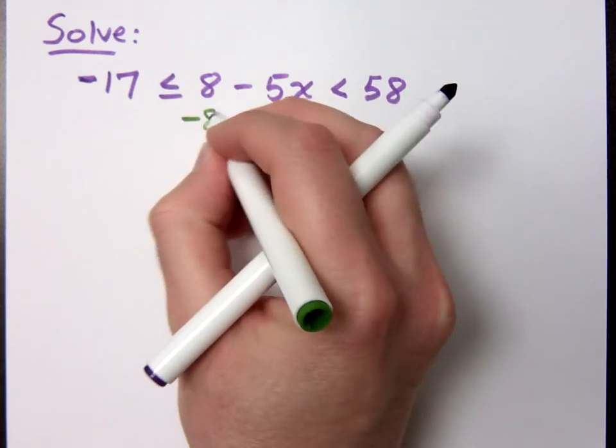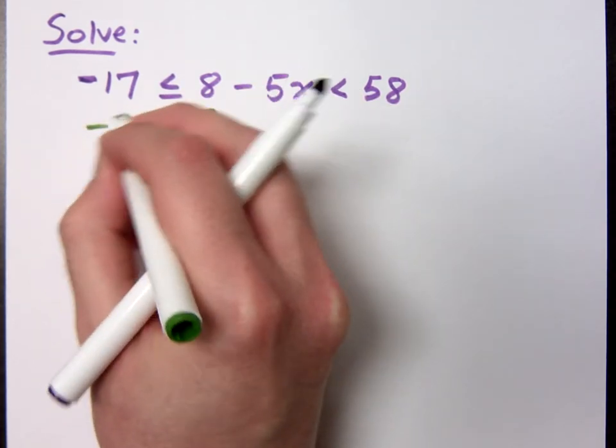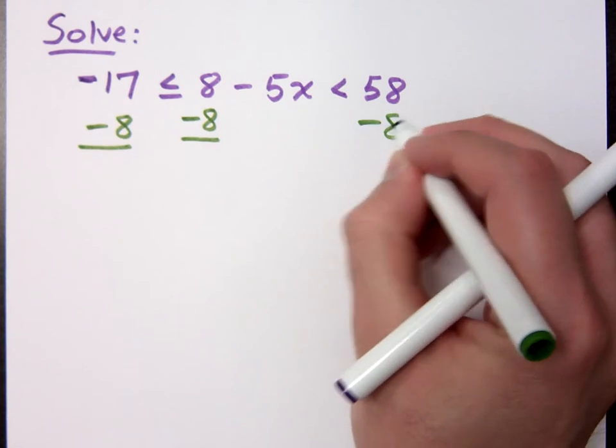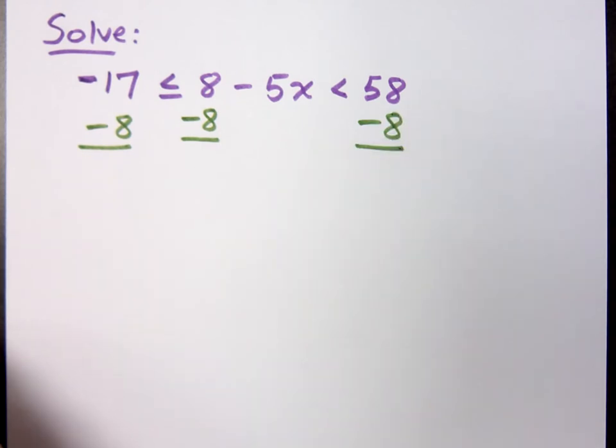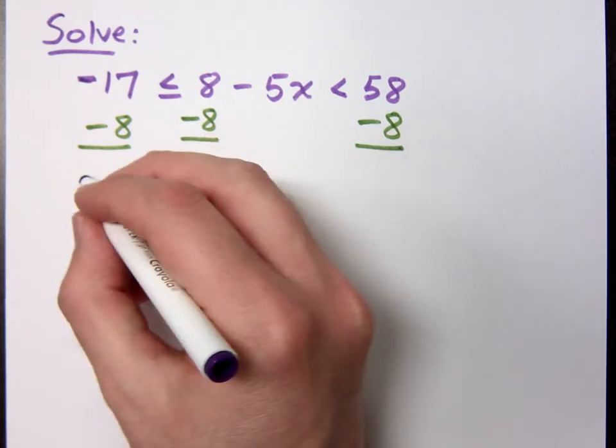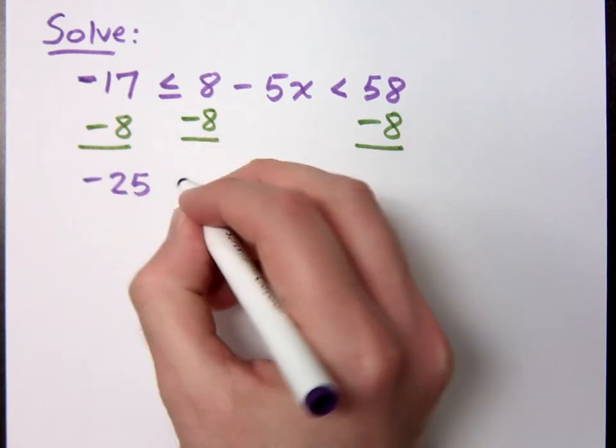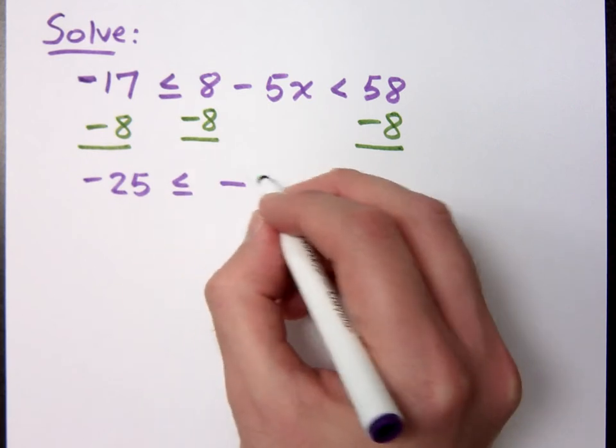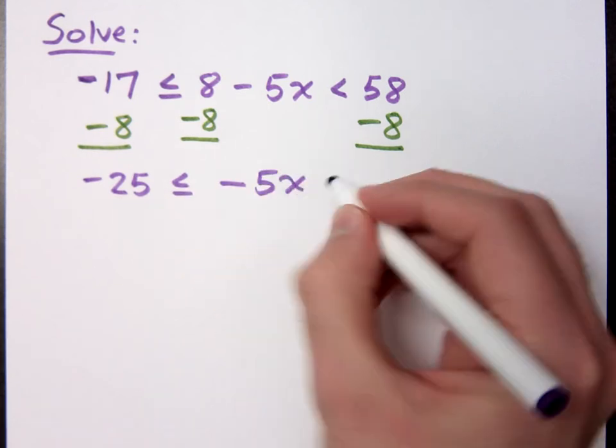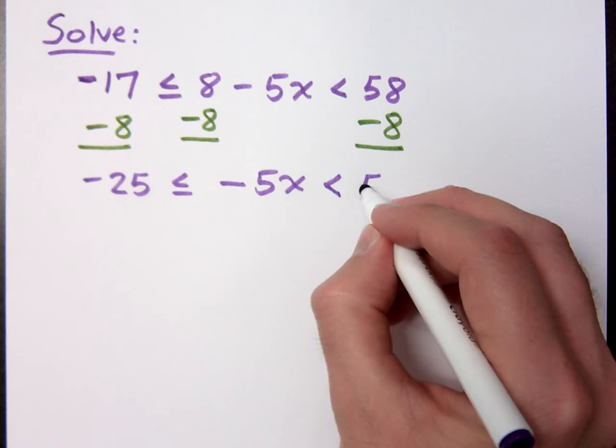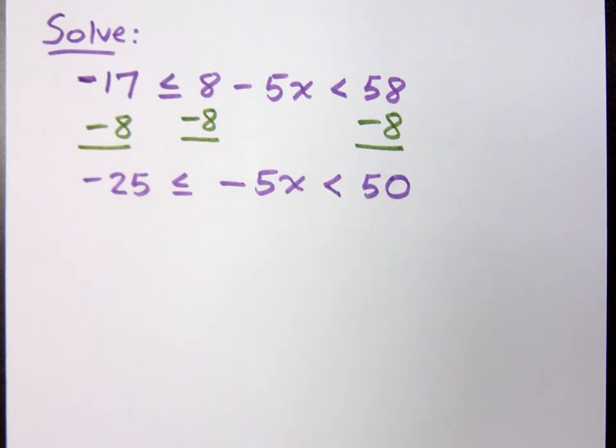You want to move the 8 away, so subtract 8 from all three parts of the inequality. And what does that make my inequality look like now? Negative 25. Negative 25 is less than or equal to negative 5x, which is less than 50.